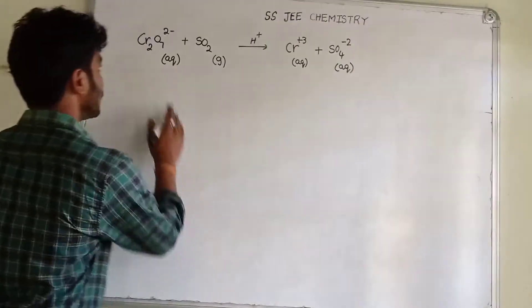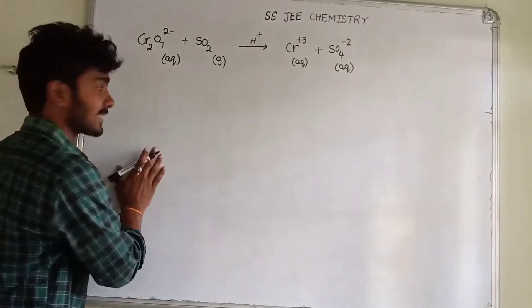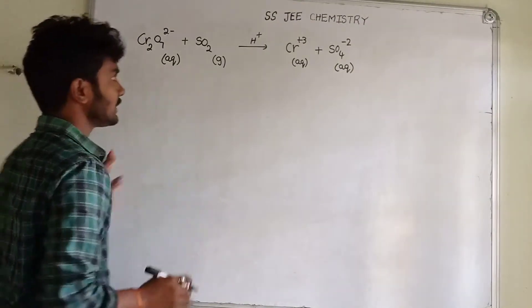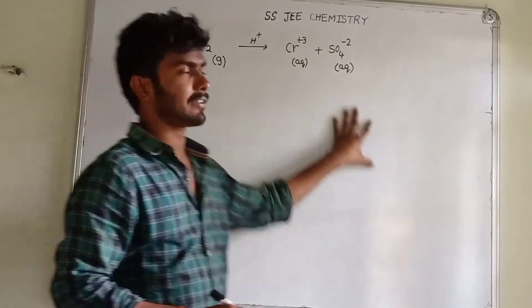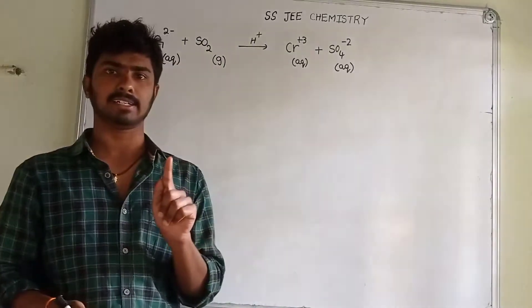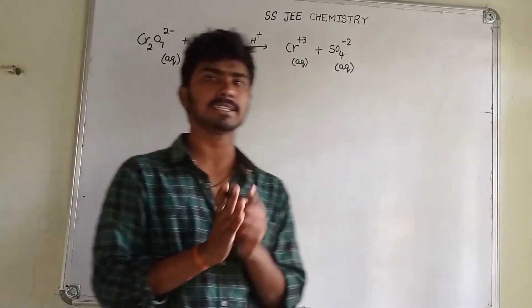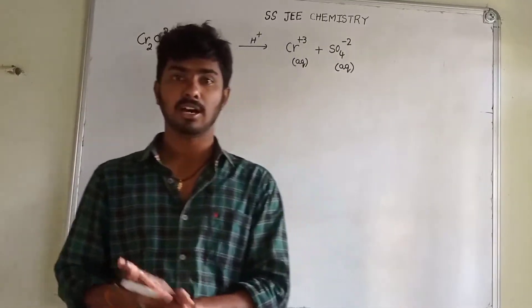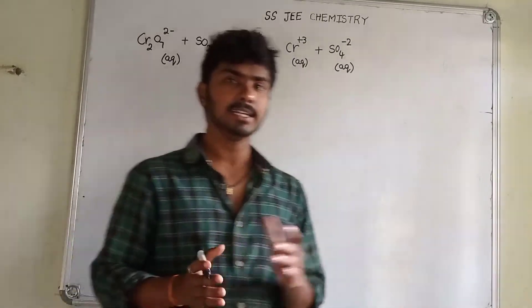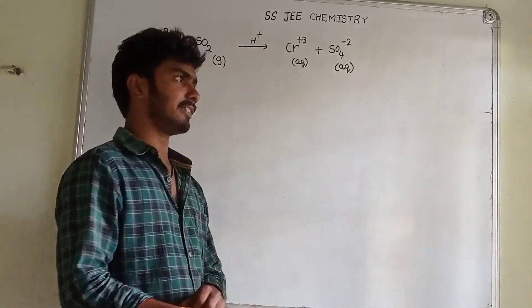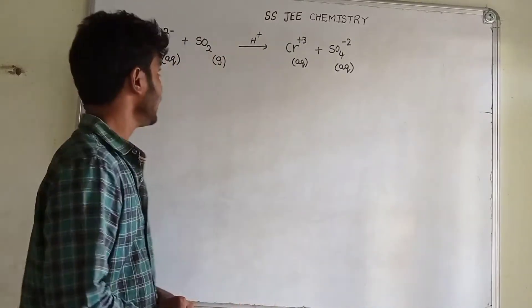Next, we have the status. We have Cr2O7 and Cr plus, so we have two questions — one question we have to answer. That involves oxygen and reduction.